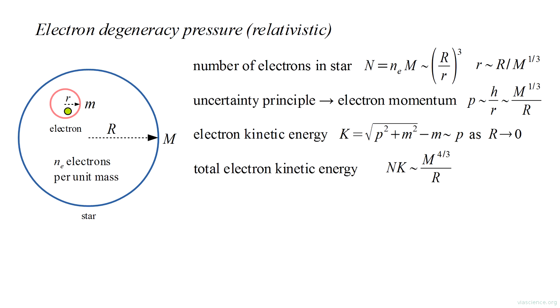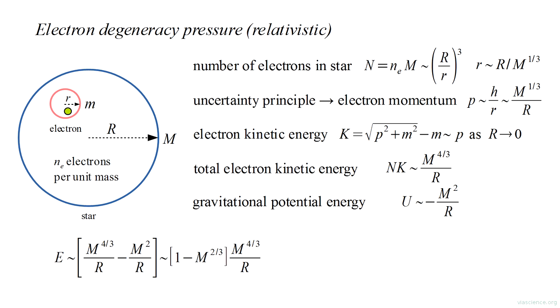The result is that the total kinetic energy varies as one over the star radius, not one over the radius squared. Combining this with the gravitational energy, we get a total energy that varies as a constant over the star radius. We see that if the star's mass is small, the constant will be positive, so the energy would again approach positive infinity as the radius approaches zero.